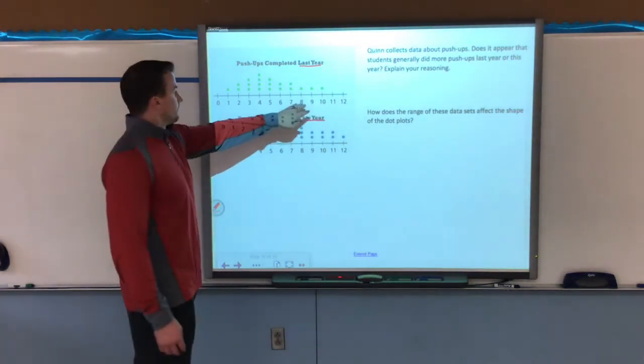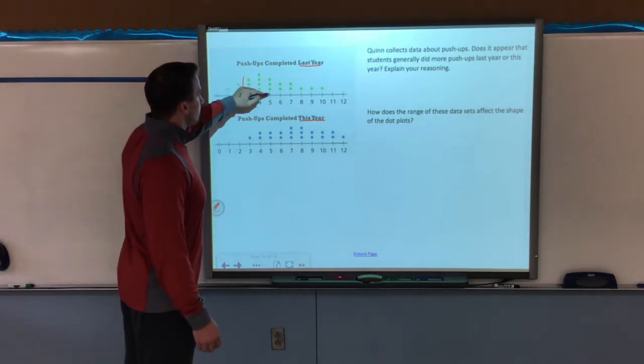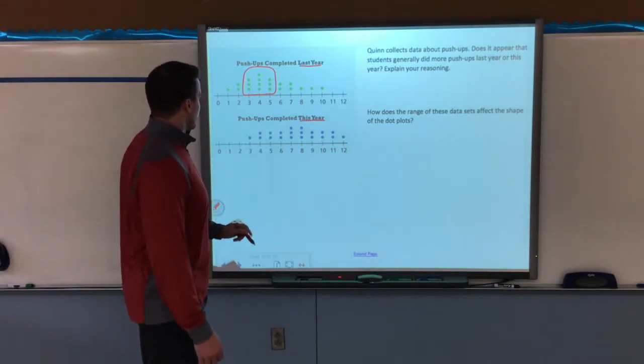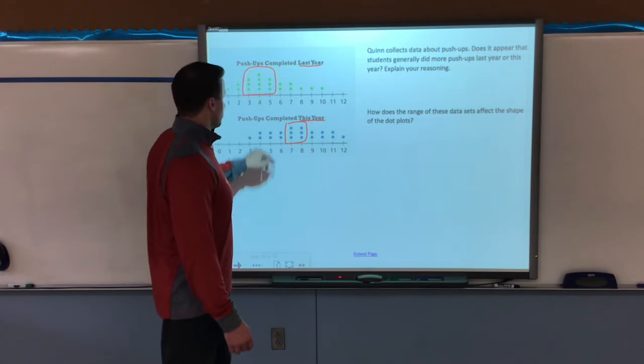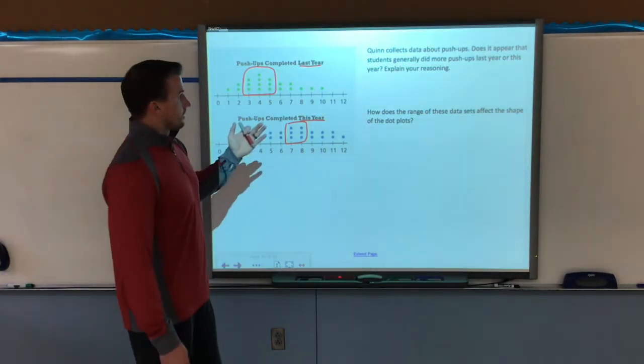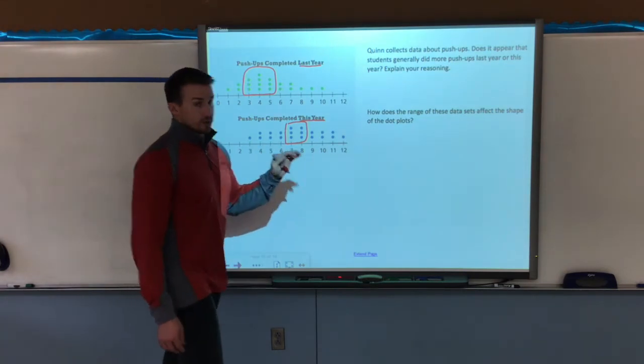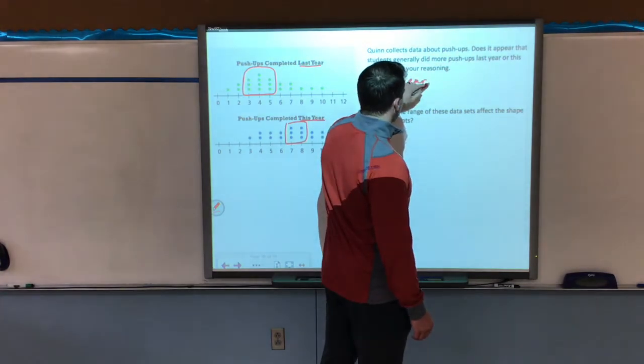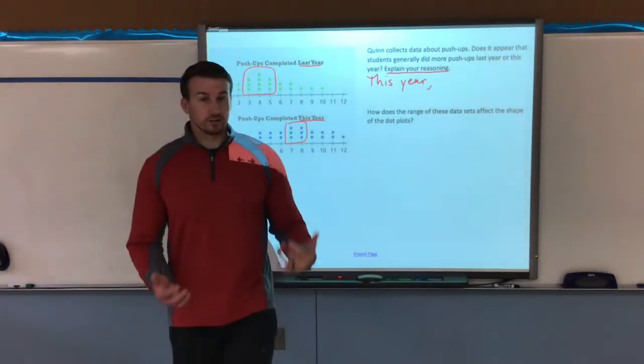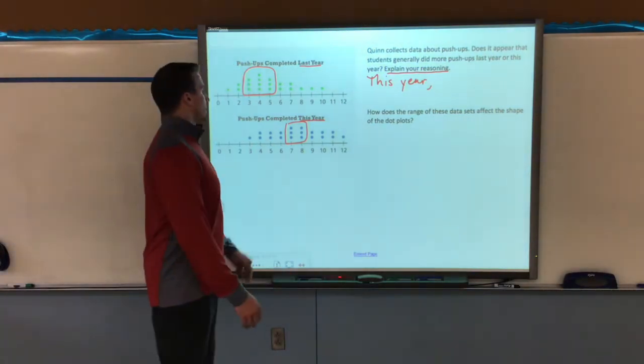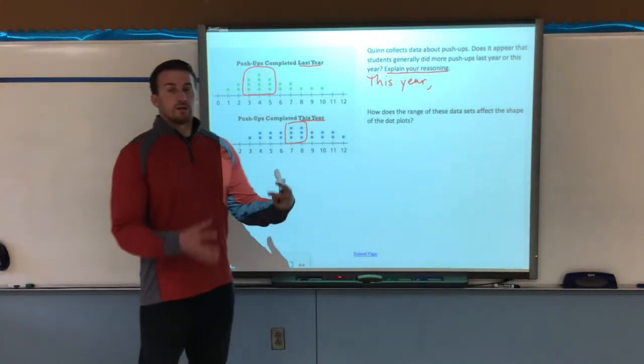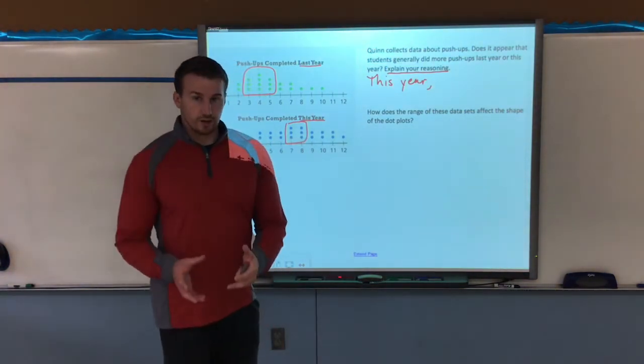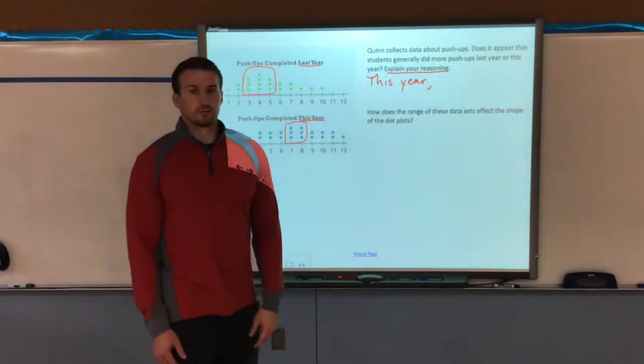So if we look at last year, the majority of the dots were between three and five for pushups. Well, if we look at this year's, the majority of the dots were between seven and eight. So does it appear that students did more pushups last year or this year? We would say this year, and again, for explaining our reasoning, we would just say that the frequency of numbers for the data set for pushups this year was greater than the numbers for last year. Pretty simple.